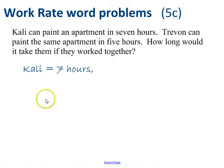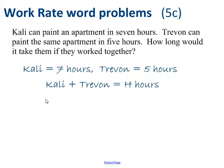Kali can do the apartment by himself, herself, I don't know the name, Kali, in seven hours. If Trevin did it, he would do it in five hours. Together, well, I'm going to call it H hours.